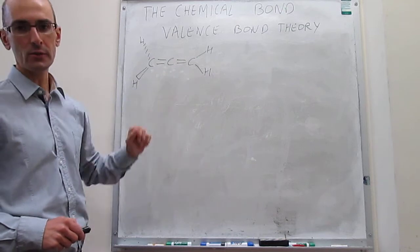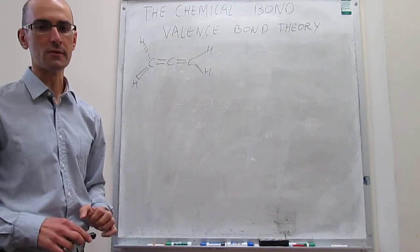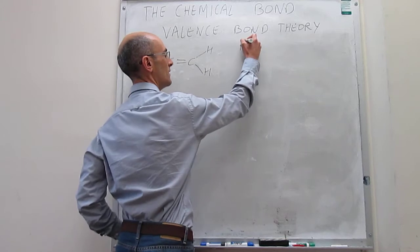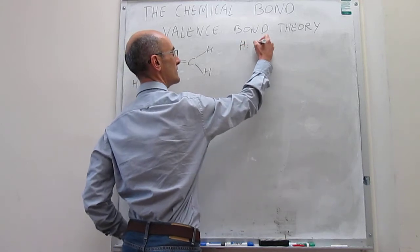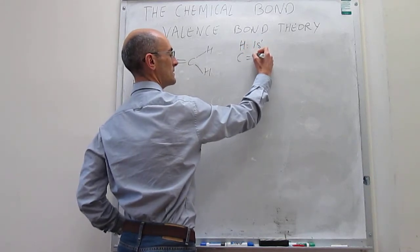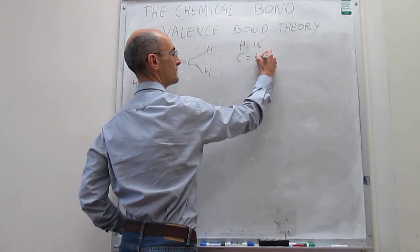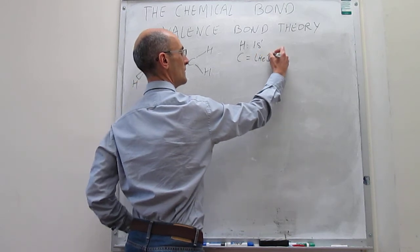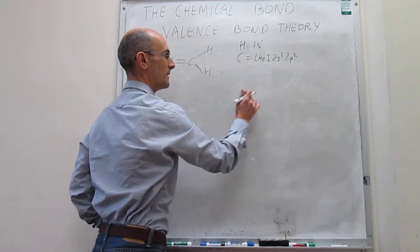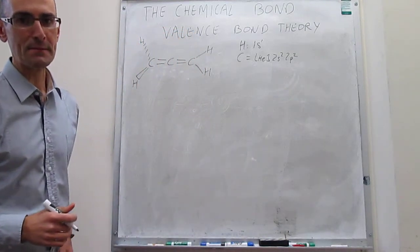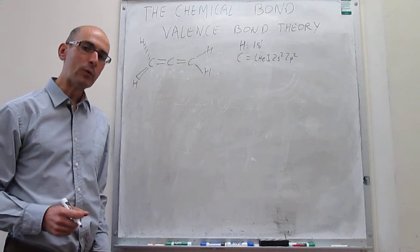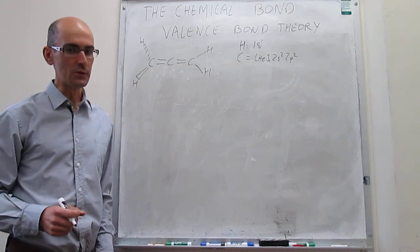The first thing that we do is draw the electronic configurations of each of the atoms. We have hydrogen, which has a 1s1 electronic configuration, and carbon is [He] 2s2 2p2. Carbon is susceptible to undergo hybridization, so we have to consider that as well.